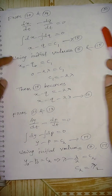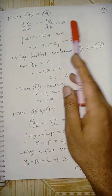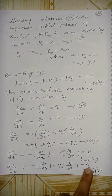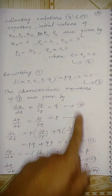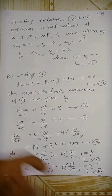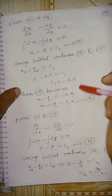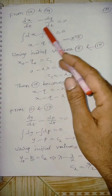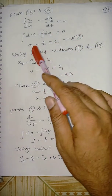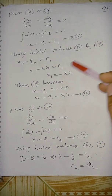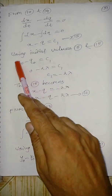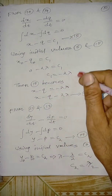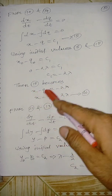From equations 10 and 14: dx/dt = q and dq/dt = q. The right-hand sides are equal, so dx/dt − dq/dt = 0. Integrating each term: x − q = C1. Using initial values x0 = 0 and q0 = 2·lambda, we get C1 = 0 − 2·lambda = −2·lambda. So x − q = −2·lambda, giving x = q − 2·lambda.